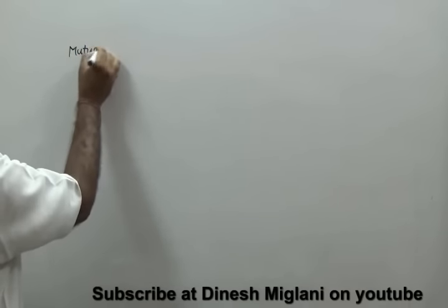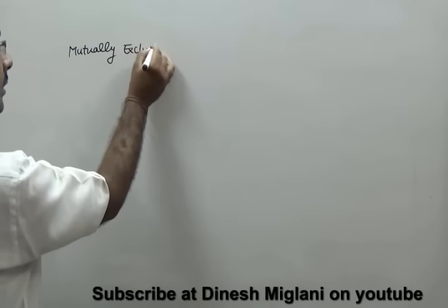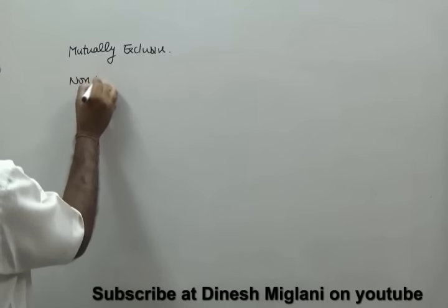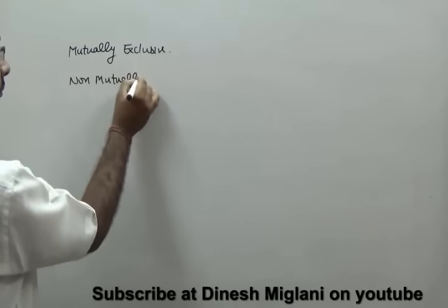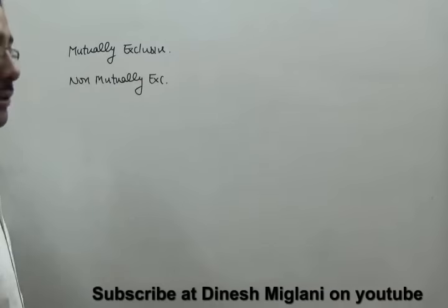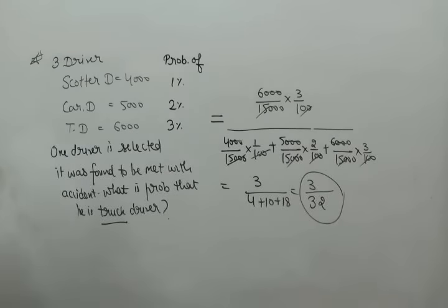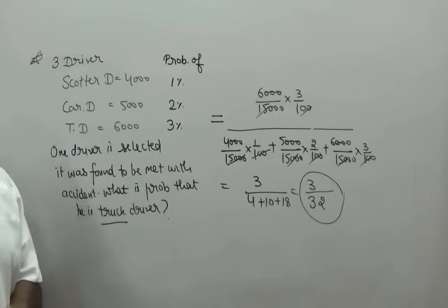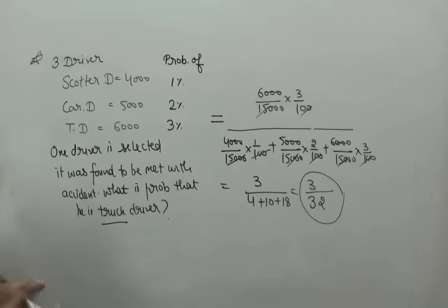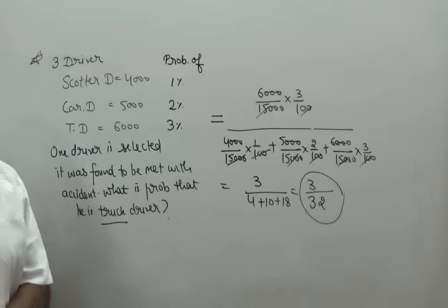The next terms are mutually exclusive and non-mutually exclusive events. As an example, the probability of selecting a drunk driver involved in an accident is 3 upon 32. This touches on the concept of Bayes' theorem. These types of questions are generally not asked in MBA examinations, but since they deal with the concept of probability, there may be a chance of encountering them. Thank you very much.